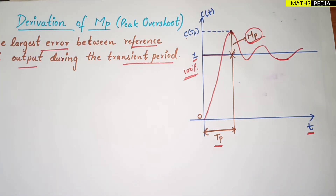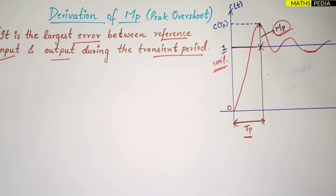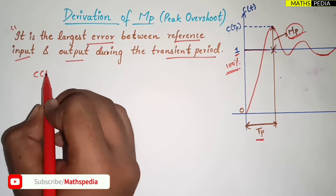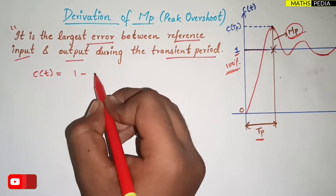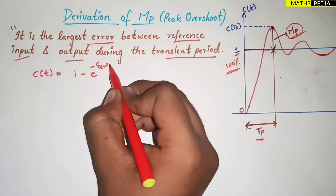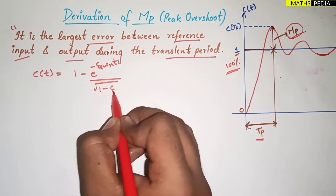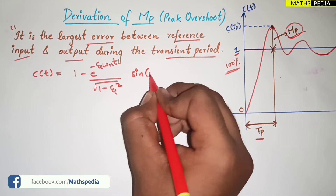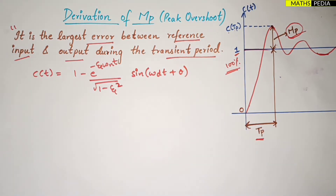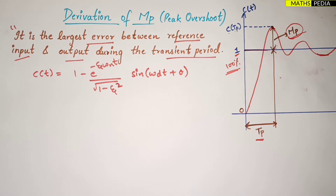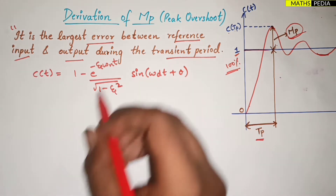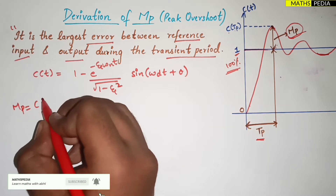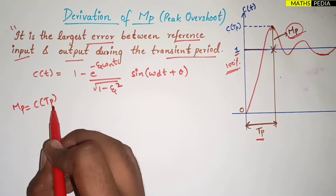Now let us see the derivation. We have c(t) = 1 − e^(−ζωn·t) / √(1−ζ²) · sin(ωd·t + θ). This is the response of a second-order underdamped system. For peak overshoot Mp, we need to find c(tp).